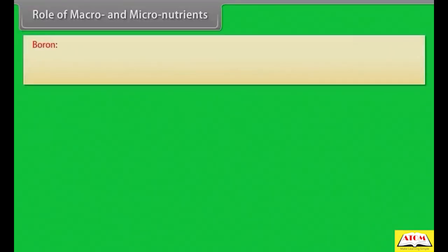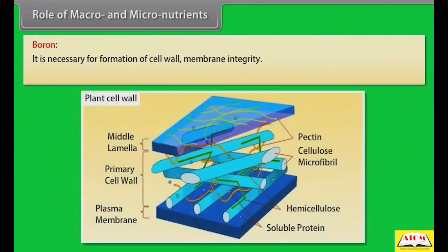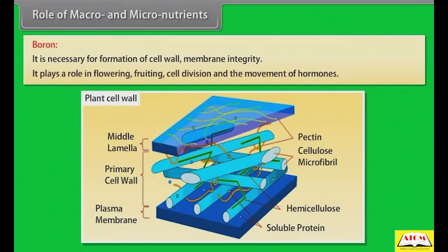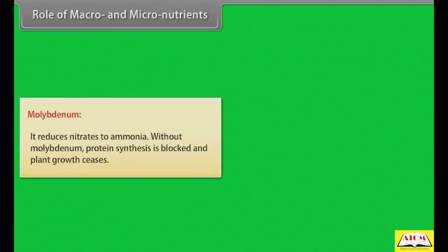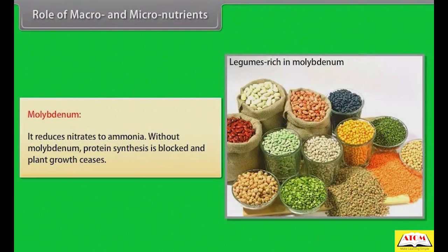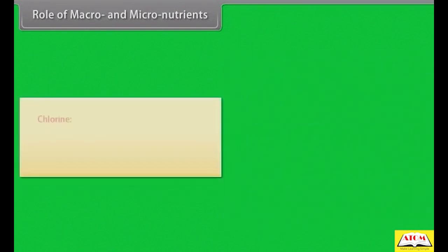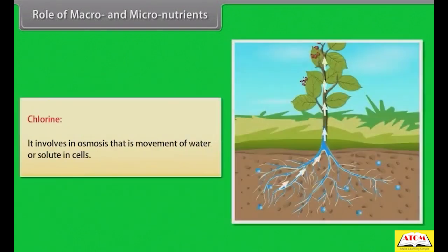Boron: it is necessary for formation of cell wall and membrane integrity. It plays a role in flowering, fruiting, cell division and the movement of hormones. Molybdenum: it reduces nitrates to ammonia. Without molybdenum, protein synthesis is blocked and plant growth ceases. Chlorine: it is involved in osmosis, that is the movement of water or solute in cells.